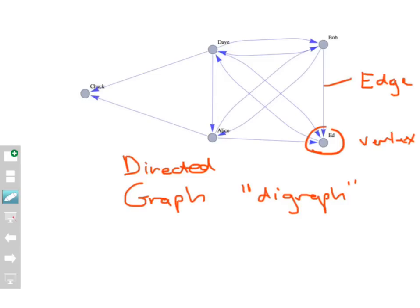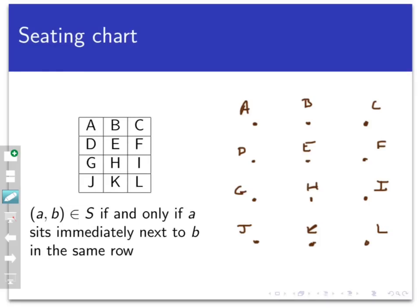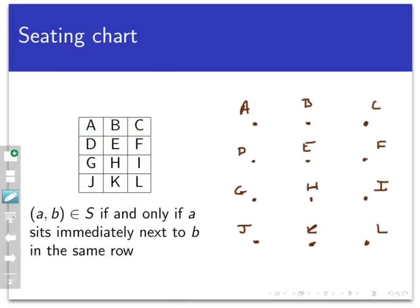So here's a simple example. Let's suppose we have a class full of students, and you have them in a seating arrangement like this. We're going to keep the class size small, just 12 students, and we're going to label the students A through L. Now let's form a relation S on the set of students by letting (a, b) belong to S if and only if a sits next to b in the same row.